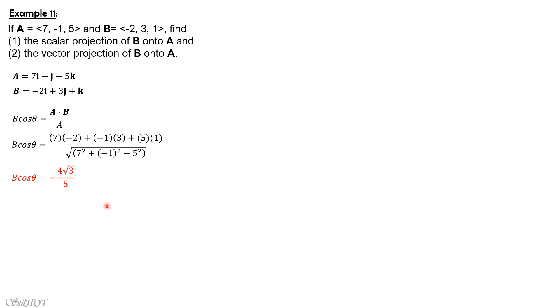Then for the vector projection of b onto a, all you have to do, because this is a scalar, is multiply this by the unit vector of a, and the unit vector of a is simply vector a divided by the magnitude of a, which is 5 square root of 3.